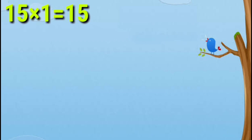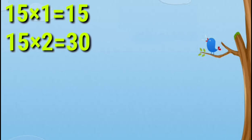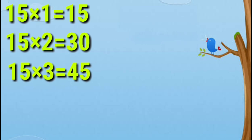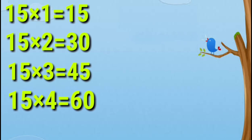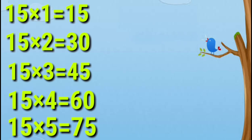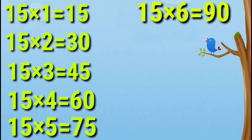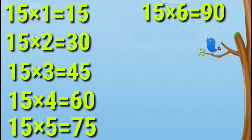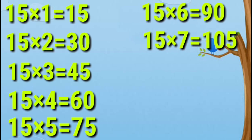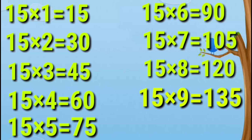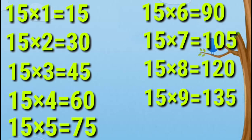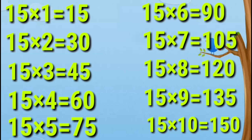15 ones are 15. 15 twos are 30. 15 threes are 45. 15 fours are 60. 15 fives are 75. 15 sixes are 90. 15 sevens are 105. 15 eights are 120. 15 nines are 135. 15 tens are 150.